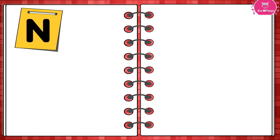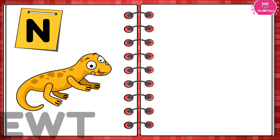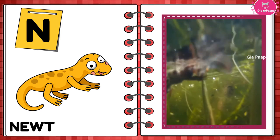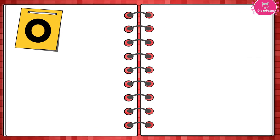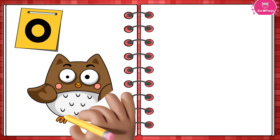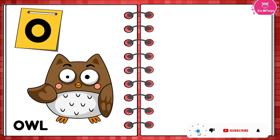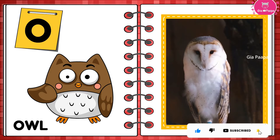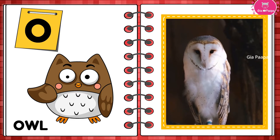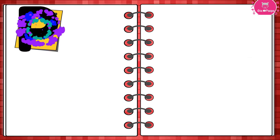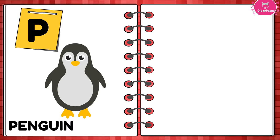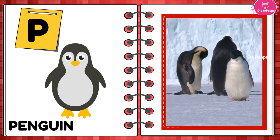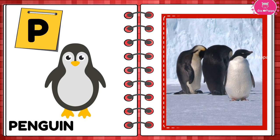N is for Newt. Newt. N is for Newt. Newt. O is for Owl. Owl. O is for Owl. Owl. P is for Penguin. Penguin. P is for Penguin. Penguin.